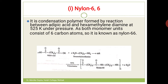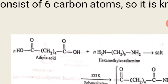First is nylon 6-6. We call it 6-6 because within the two monomer units, there are 6 carbon atoms present each. The first monomer unit is adipic acid: COOH-(CH₂)₄-COOH, giving a total of 6 carbon atoms.